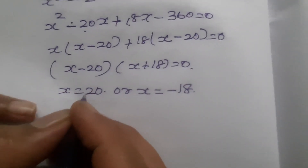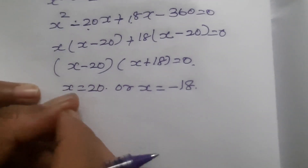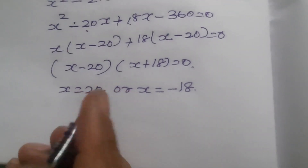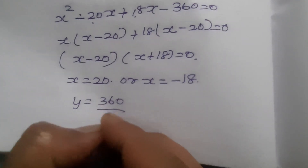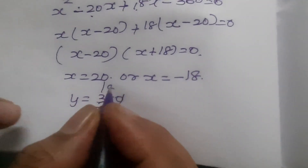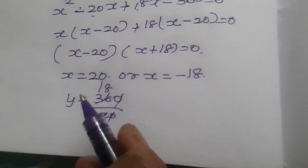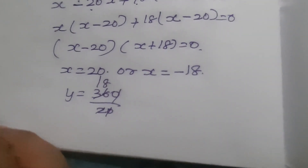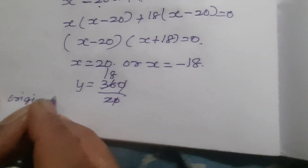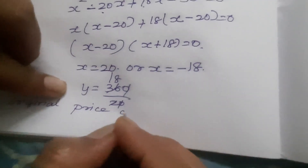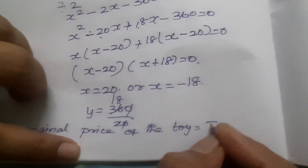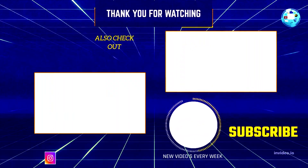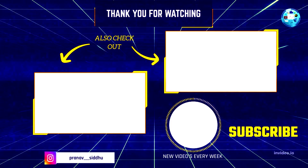So X equals 20 is the original price. The number of toys is Y equal to 360 divided by X, that is equal to 18. It is asked to find the original price alone. Therefore, the original price of the toy is Rs. 20. Thank you.